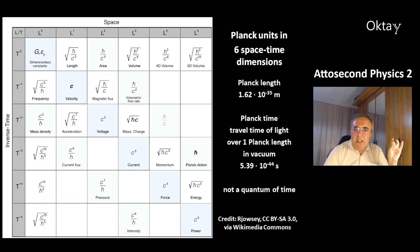This is an overview of Planck units in the six space-time dimensions. There is a Planck length, which was defined as 1.62 times 10 to the minus 35 meters. And there is a Planck time. This is the travel time of light over one Planck length in a vacuum. This Planck time is 5.39 times 10 to the minus 44 seconds.